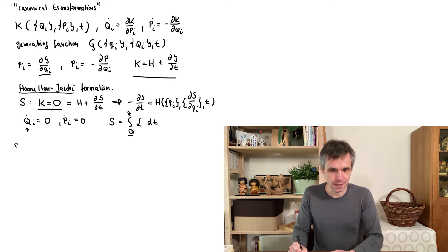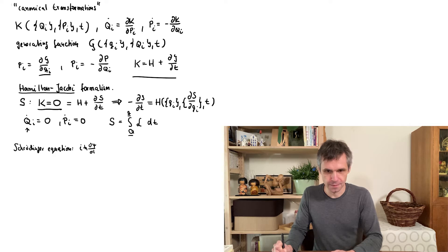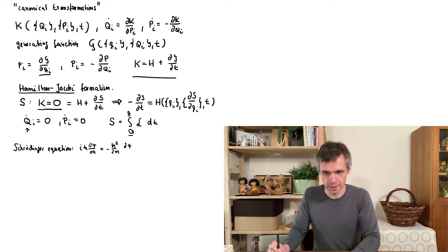So let me first write down the Schrödinger equation in this following form for a point particle of mass m but just moving in one spatial dimension allowing for some potential energy V.